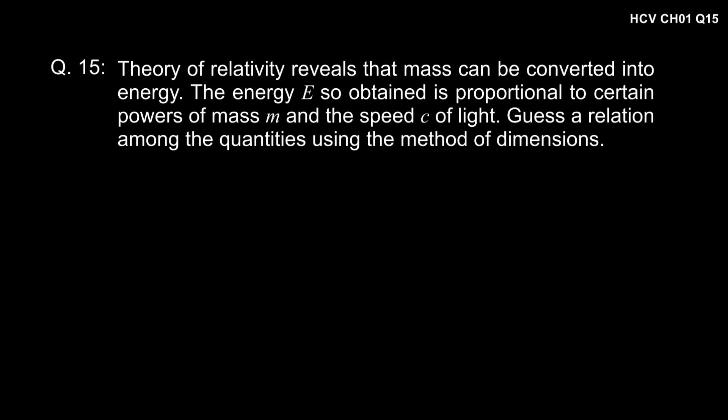Theory of relativity reveals that mass can be converted into energy. The energy E so obtained is proportional to certain powers of mass M and speed C of light. Guess the relation among the quantities using the method of dimensions.